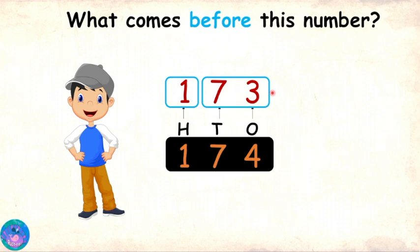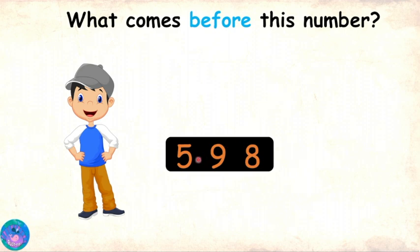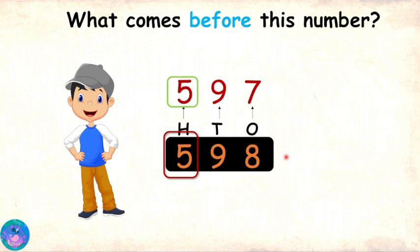Can I try now? Of course, here is another number. This number is 598. I will start with the ones digit, which is 8. 7 comes before 8, so the predecessor will have 7 in ones place. And tens and hundreds digits will stay unchanged. So the predecessor of 598 is 597. Absolutely correct.